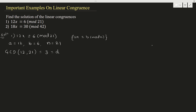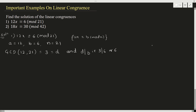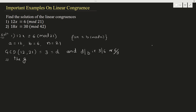So d is 3. The given equation has a solution whenever d divides b. Here d is 3 and b is 6, and 3 divides 6. This implies the given equation has a solution — and it has d solutions, so it has 3 solutions. Now we need to find what those 3 solutions are.